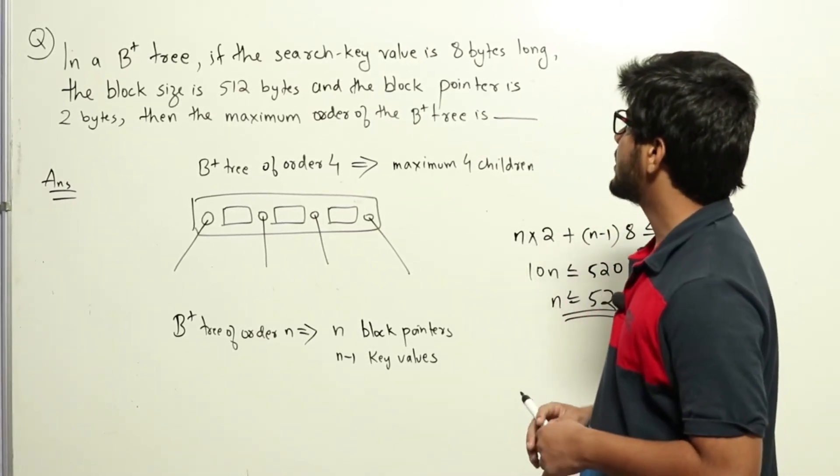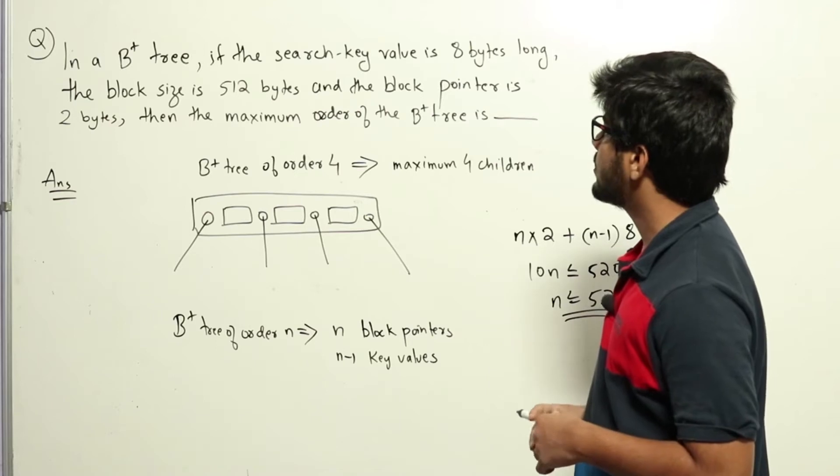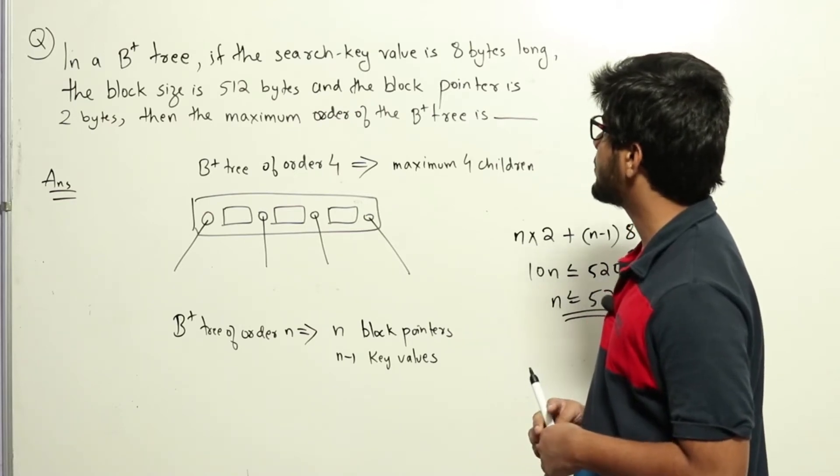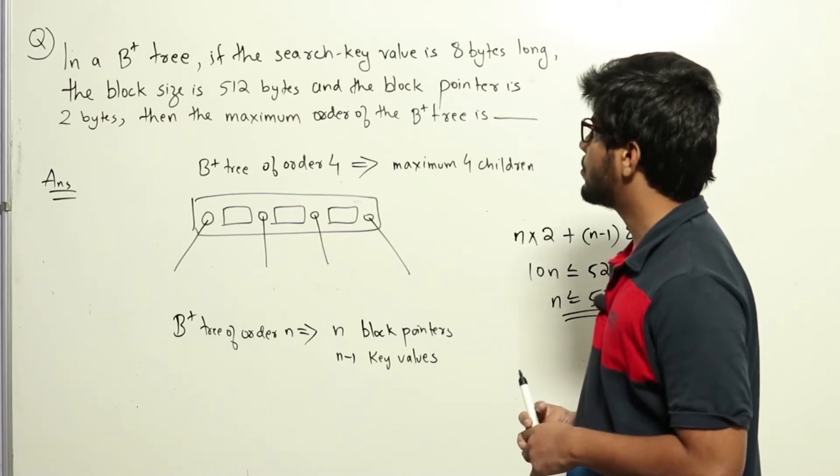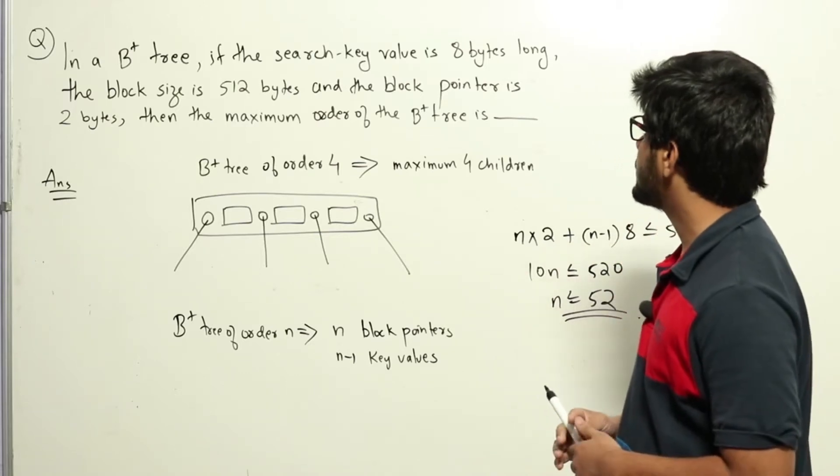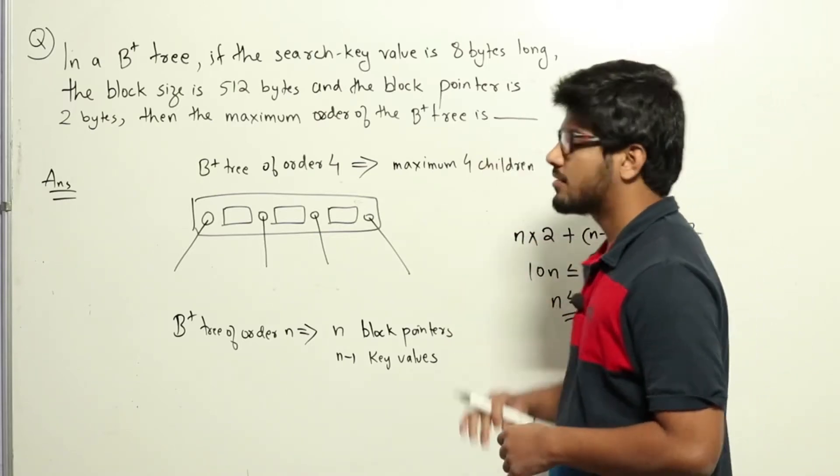In a B+ tree, if the search key value is 8 bytes long, the block size is 512 bytes, and the block pointer is 2 bytes, then the maximum order of the B+ tree is...